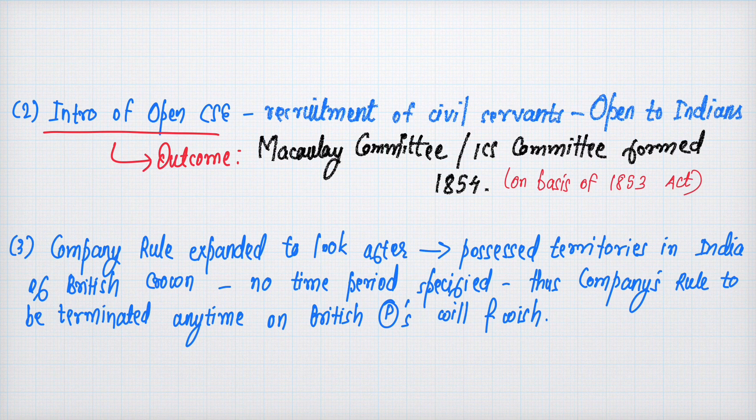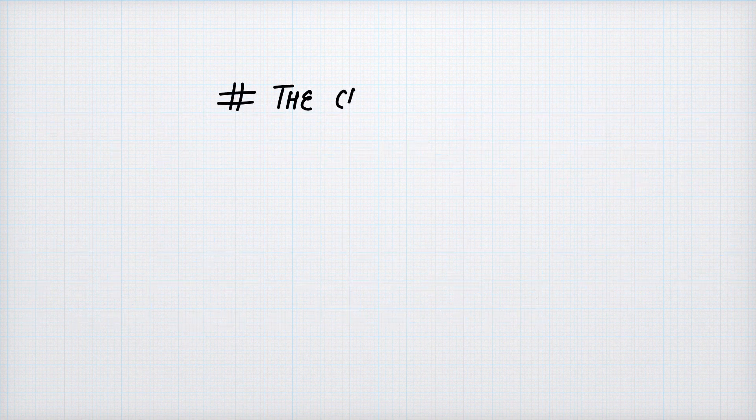Open civil service examinations began in India for recruitment of civil servants, also open to Indians. As an outcome, the Lord Macaulay Committee — also called the ICS Committee — was formed in 1854. This is how the story of civil services began in our country. The East India Company was given a caretaking role for British Crown territories in India, terminable at any time on British Parliament's will.